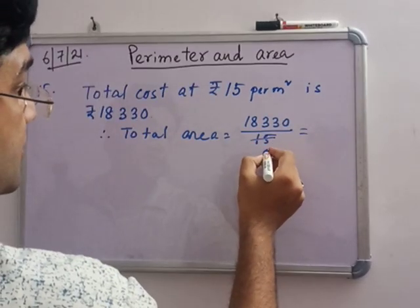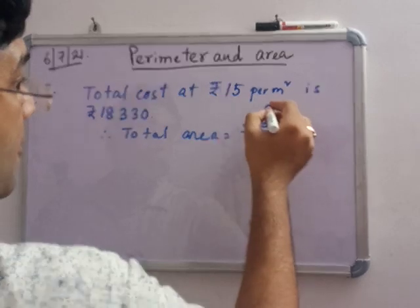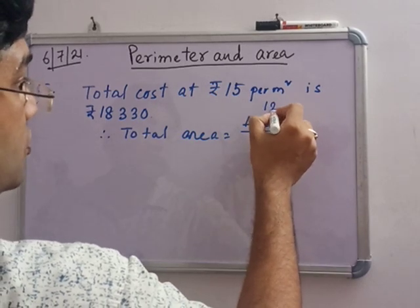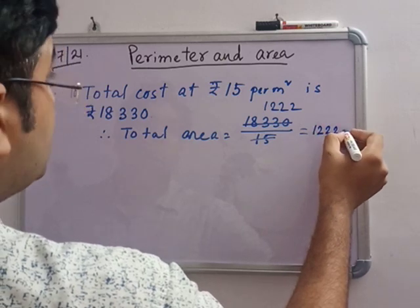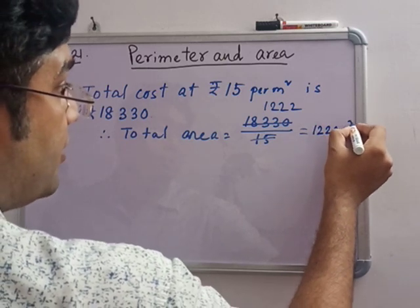That means this is 1222 meter square. Breadth is 26 meter.